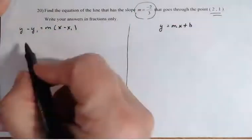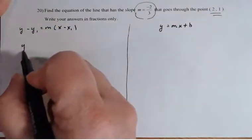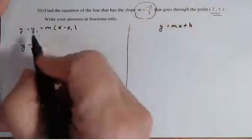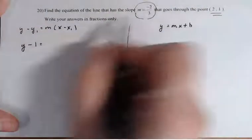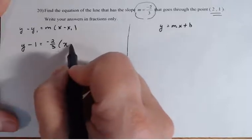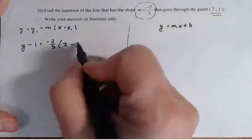So over here, I'm going to have Y minus, well, Y1 is the Y coordinate of that ordered pair. So it's going to be one equals M times X minus X1, which is the X coordinate of that ordered pair.